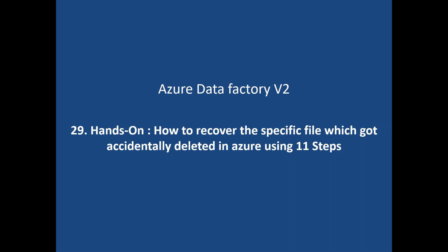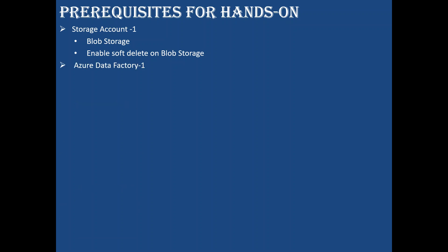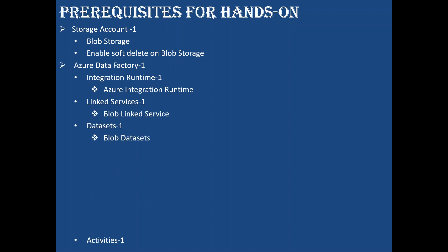From wherever you deleted the files, it doesn't matter — now we need to know how to recover them. As a prerequisite, I'll create one storage account blob storage, then enable soft delete on the blob storage. It's very important to enable this option. Most admins will enable this because it's very difficult to recover without soft delete. Then I'll create a data factory, integration runtime, linked service, dataset, and delete activity pipeline.